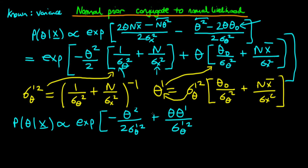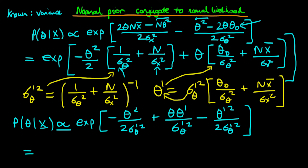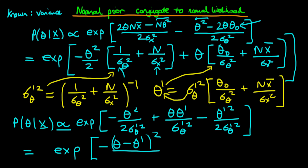Now we're going to do another trick. We're going to introduce a term which doesn't depend on theta — we can do that because we have this proportional sign, since all we really care about is powers of theta. I'm going to introduce a last term which is just minus theta prime squared divided through by 2 sigma theta primed all squared. The reason I've done that is because now we can rewrite this exponent as a quadratic: the exponent of minus theta minus theta prime, all squared, divided through by 2 sigma theta prime squared.